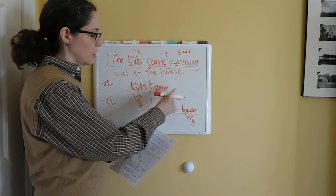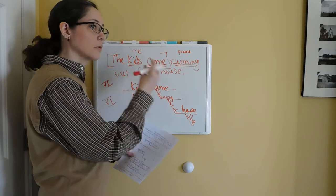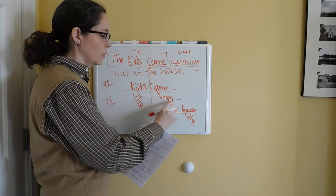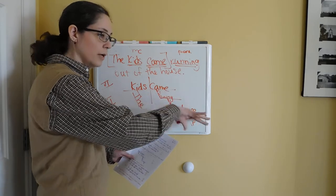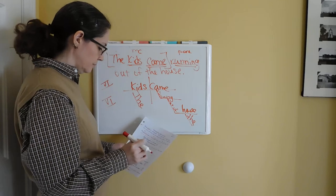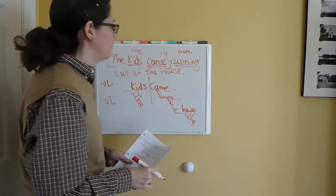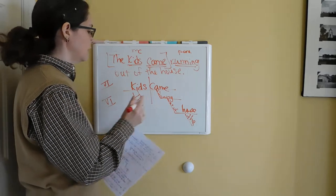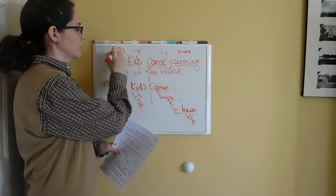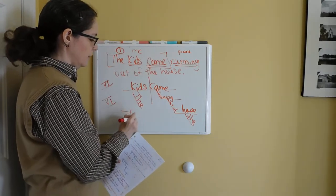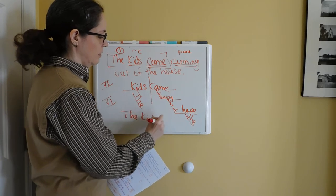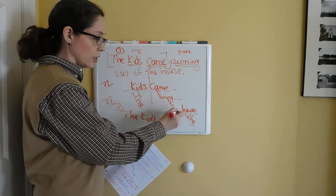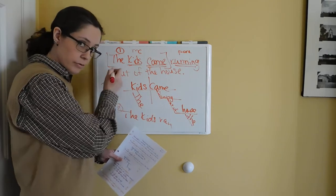Notice how the verb is coming off the other verb — it did this for an infinitive and it's doing it again here. When you add the second verb, it goes underneath the main clause's verb and shoots off. The easiest thing you can do to help yourself is to think of it as two separate sentences first — 'the kids came,' and then 'the kids ran' — so that you can slow down and consider where the parts go and what sentence pattern it is.